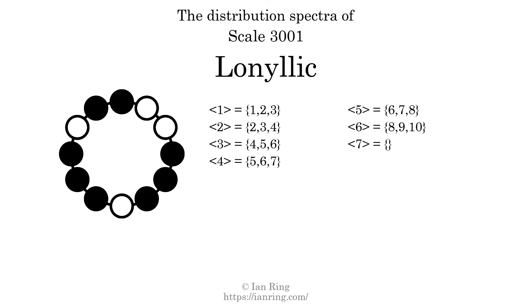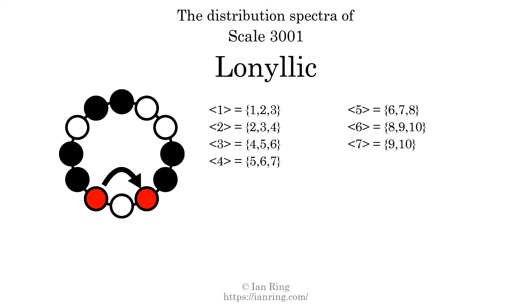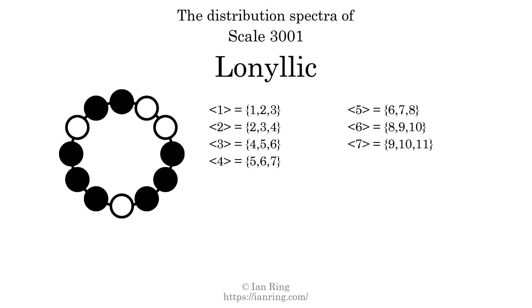And finally, the generic interval of 7 scale steps comes in 3 different specific interval sizes: 9 semitones, 10 semitones, and 11 semitones. The spectrum width of this generic interval is 2.